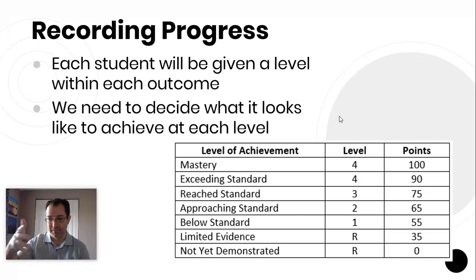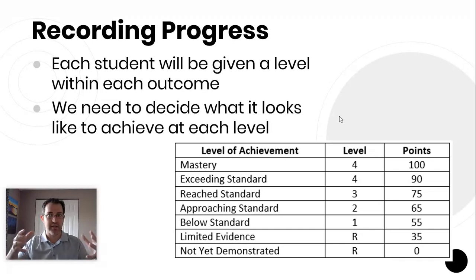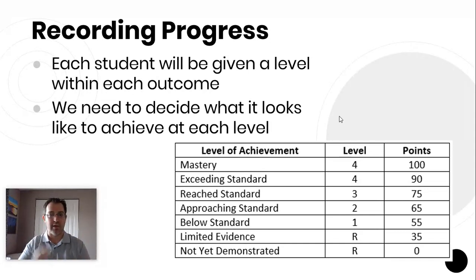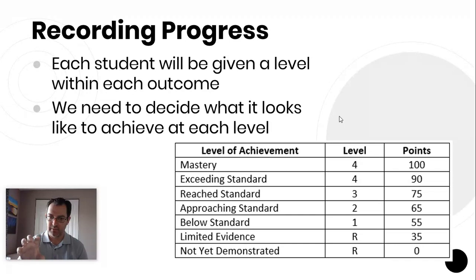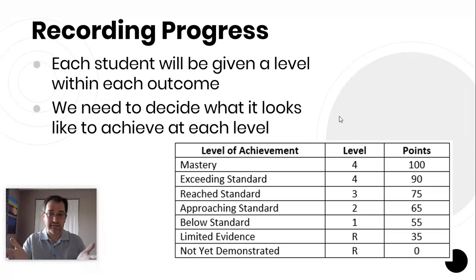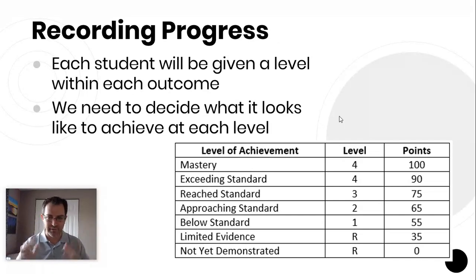We need descriptors for these seven different levels — seven different categories that our students will fit into. Every student should have one of these seven marks, one of these seven levels of achievement progression, regarding every single outcome. Narrowing in on solving equations right now, what would all seven of these look like? The bottom one is pretty easy: 'not yet demonstrated' means you haven't done anything, you haven't shown me anything.